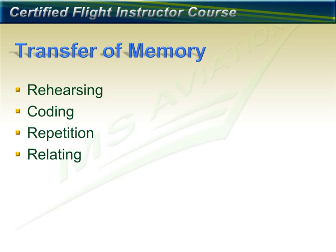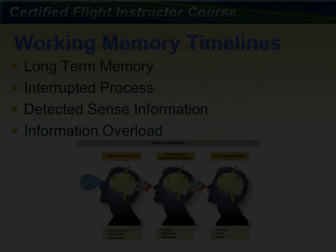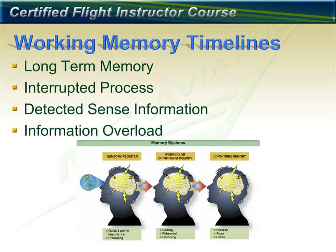The process of coding data happens consciously and subconsciously, moving information from working memory to long-term memory. You can rehearse information several times; your brain will code it, and the more you repeat it, the easier it will be to recall. The information will then be related to what is already stored in memory, enabling transfer from working to long-term memory. It takes 5 to 10 seconds for data to be processed and moved into long-term memory.